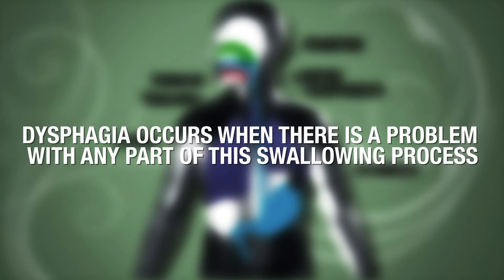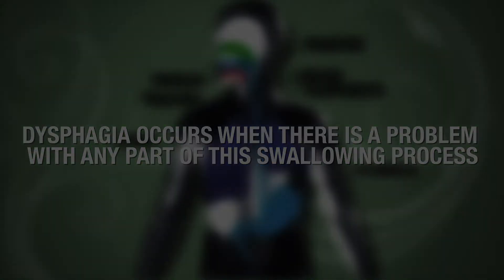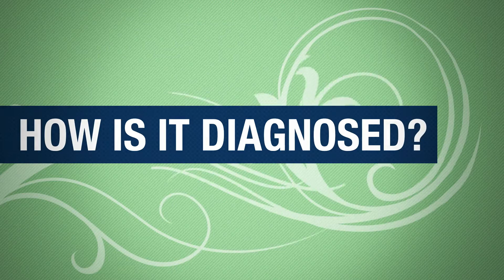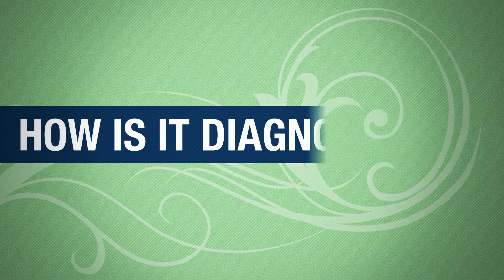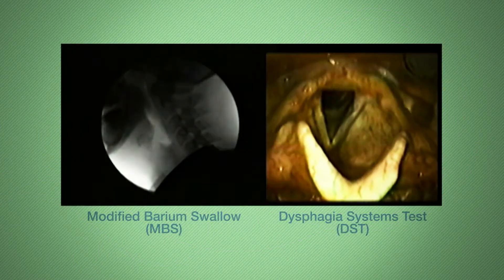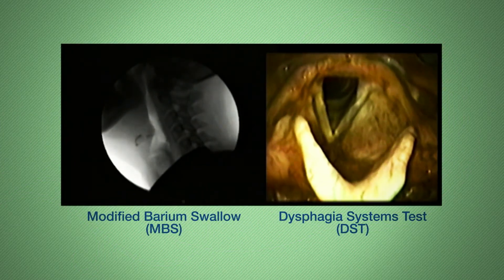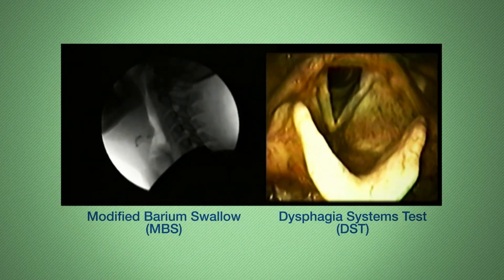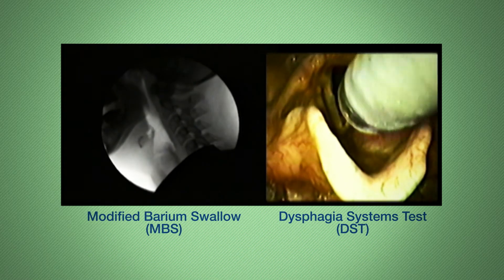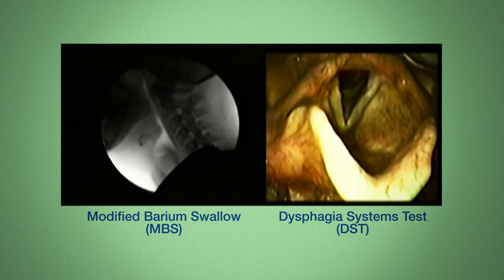Dysphagia occurs when there is a problem with any part of this swallowing process. Accurate diagnosis is vital to successful dysphagia management. On the left is a video of the modified barium swallow, a one-dimensional x-ray view of the patient's swallowing mechanism.